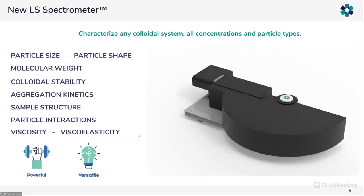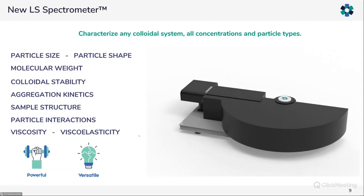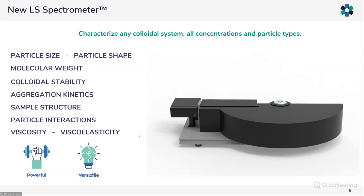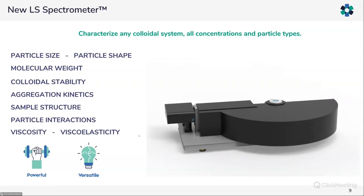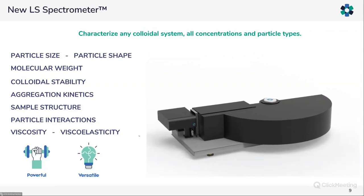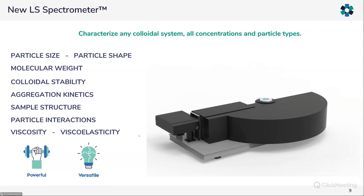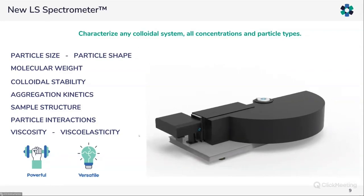The LS Spectrometer can characterize any type of colloidal system regardless of concentration or particle type. In terms of parameters, this instrument characterizes the size of particles, their shape, the polydispersity of highly complex samples, molecular weight, colloidal stability, kinetics of aggregation, sample structure, interactions between particles, and to some extent the viscosity and viscoelasticity of liquids or gel-like samples. This summarizes the power one can reach with this instrument.